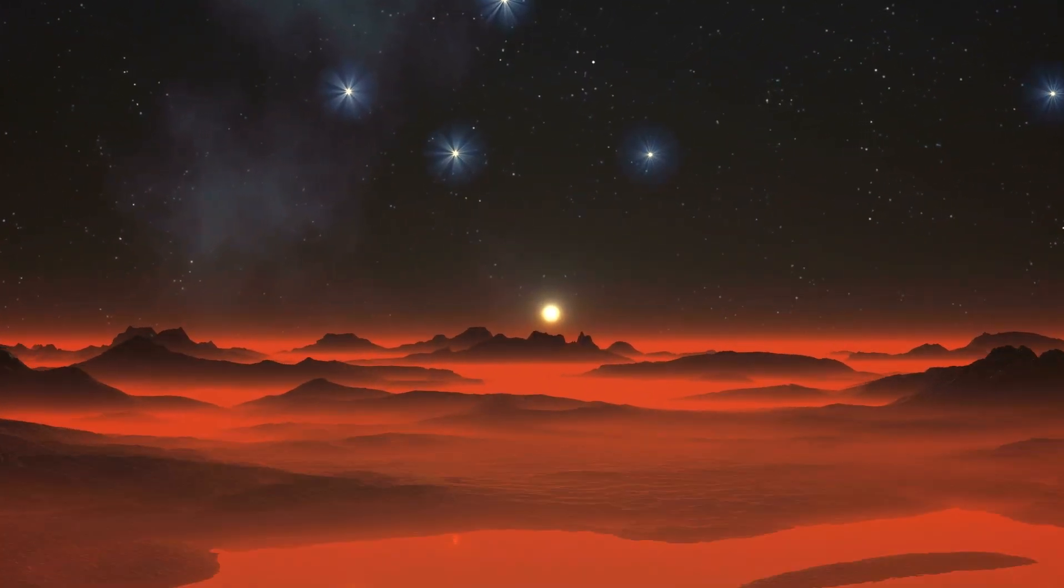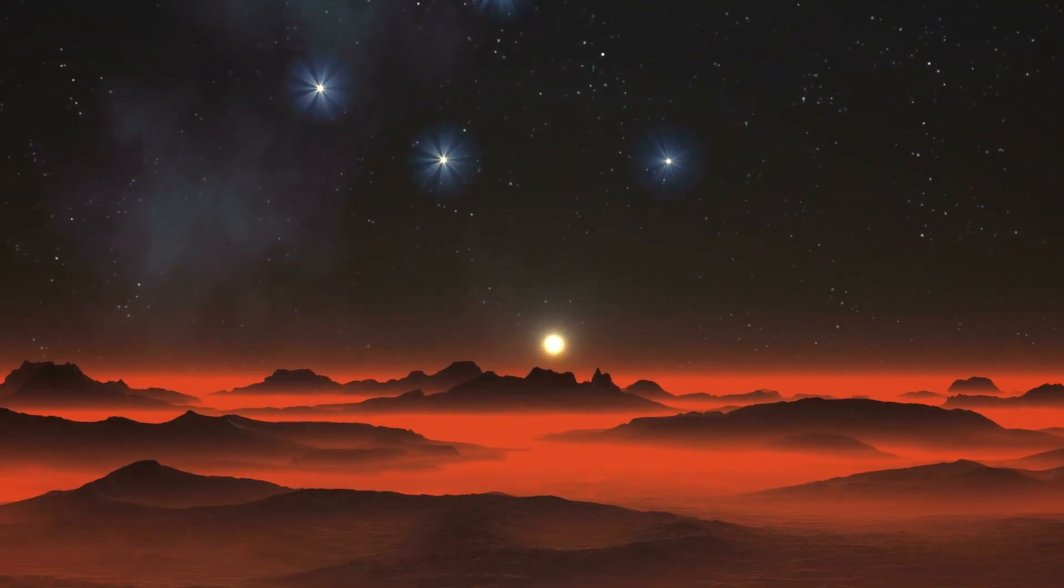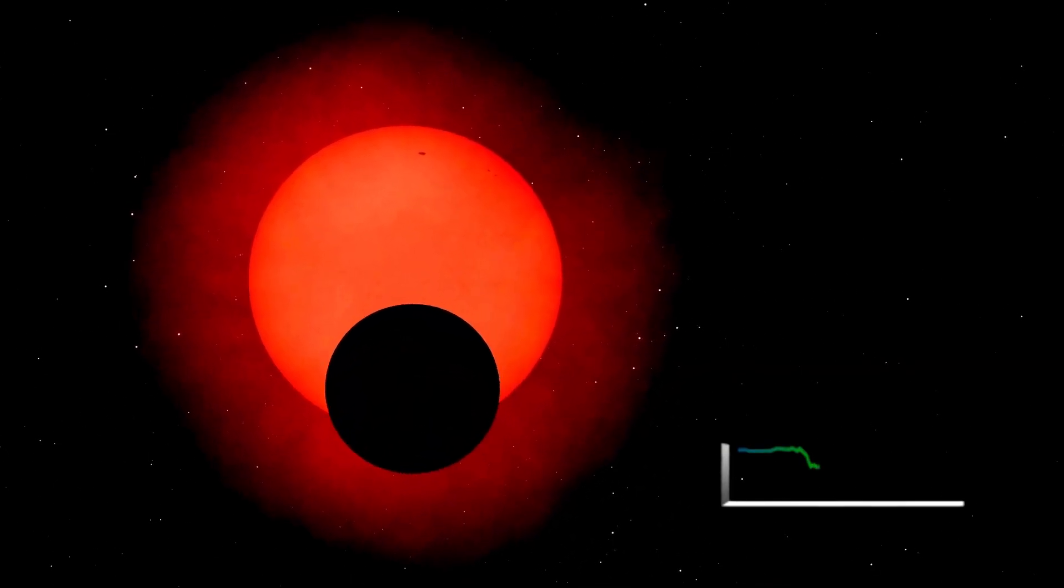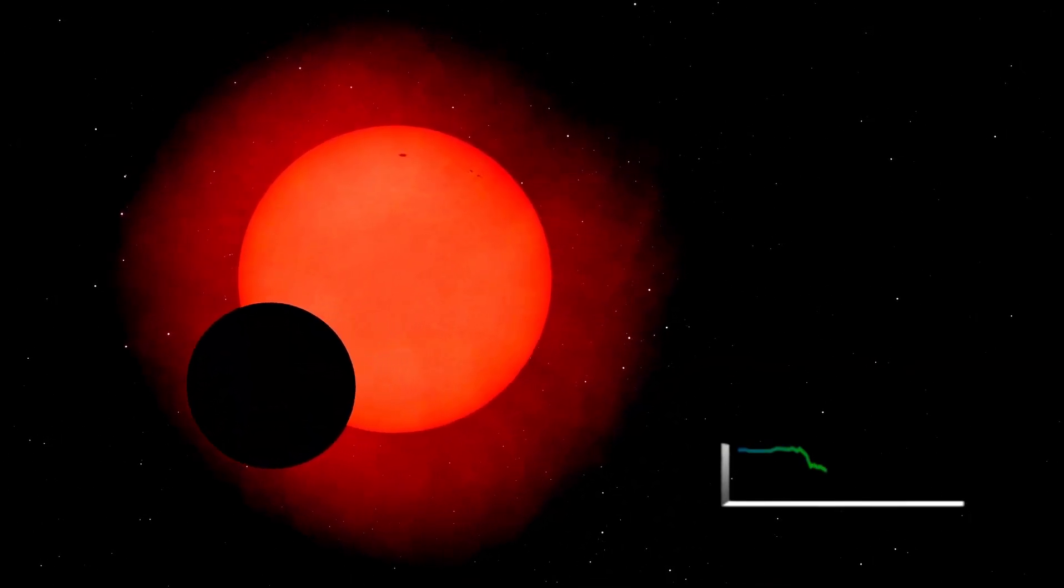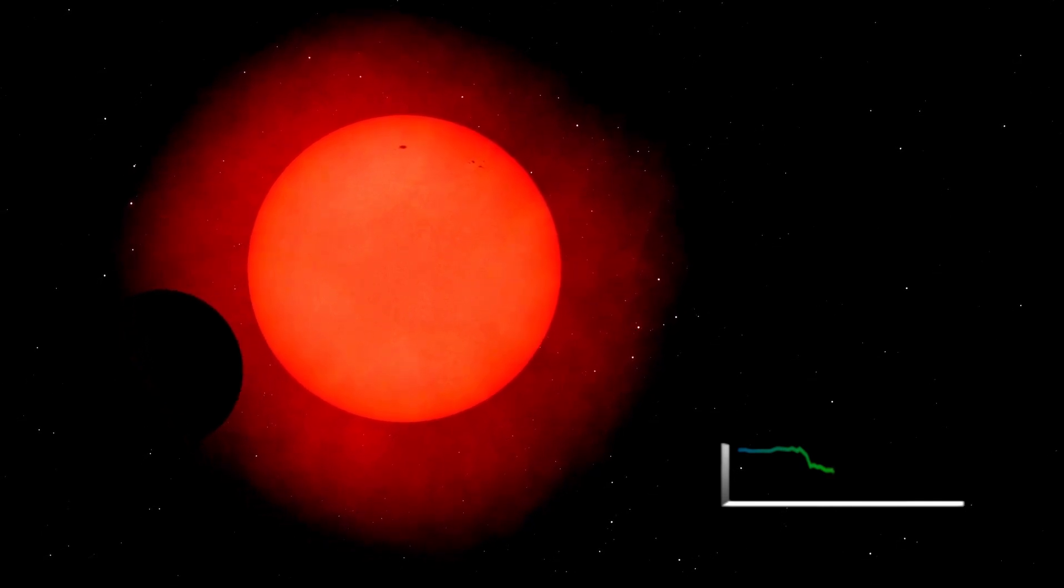With a year that lasts just 11.2 Earth days and a distance from its star that is 20 times closer than Earth is to the Sun, it is likely that one side of the planet is always bathed in daylight, while the other side remains in perpetual darkness.